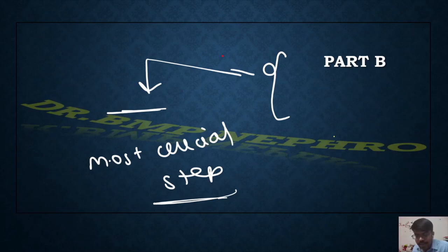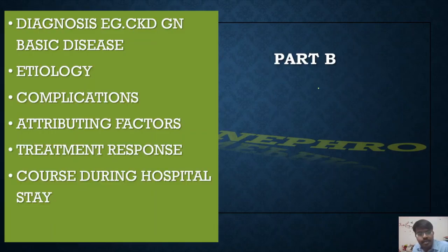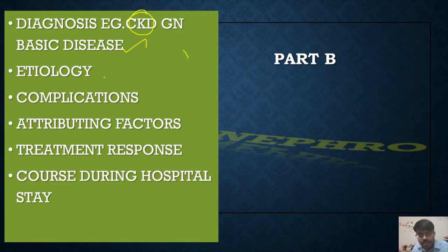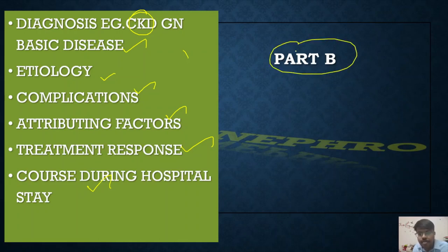Part B is the most crucial step because this is where the examiner gets an idea of how strong you are in the subject and how you are able to make a differential diagnosis. Once Part B is complete, the diagnosis or differential diagnosis should be clear from the history. For example, in GN disease, from the history we have to confirm whether the patient has any CKD component, what the basic disease is, what the etiology is, what complications are associated, and whether any treatment has been given and what the response was.